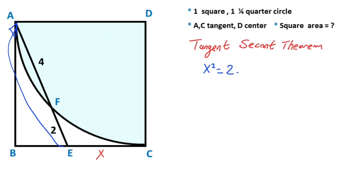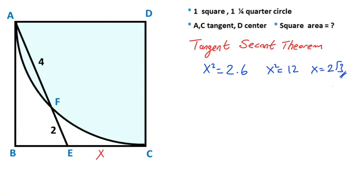The second part is six, so x squared equals 12. That means x is equal to the square root of 3. So here x equals √3.